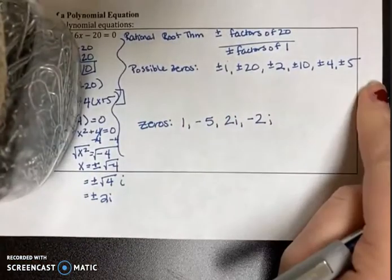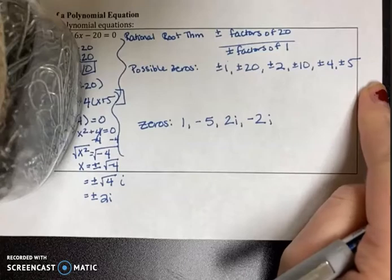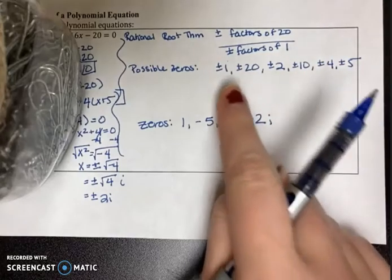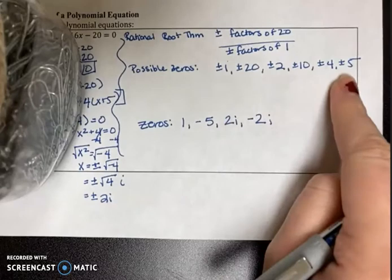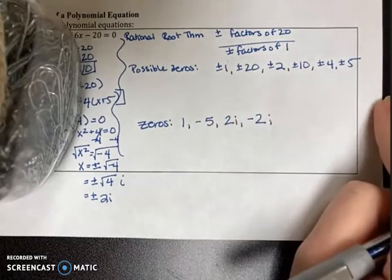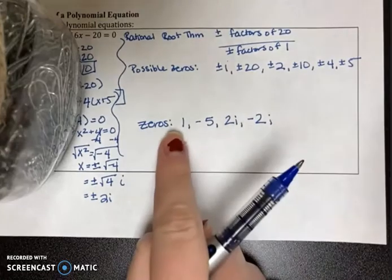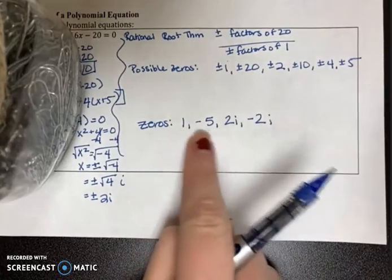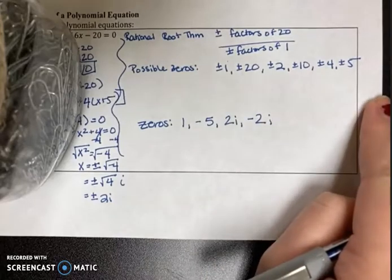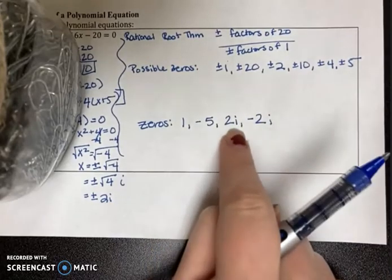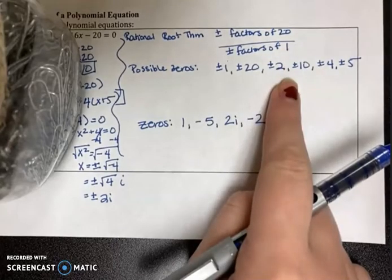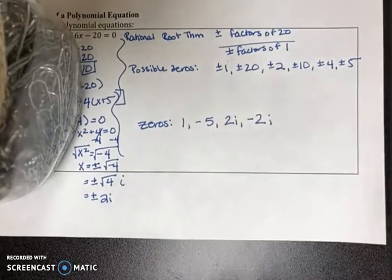Are all of my zeros showing up in the rational root theorem list? Not quite. The rational root theorem shows only possible real solutions, so the real solutions 1 and −5 are listed, but the imaginary solutions ±2i are not. Just wanted to point that out.